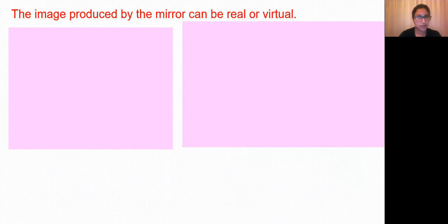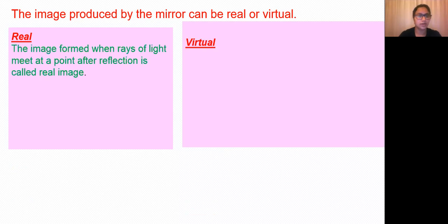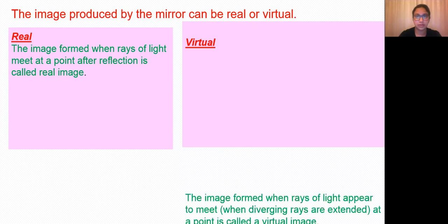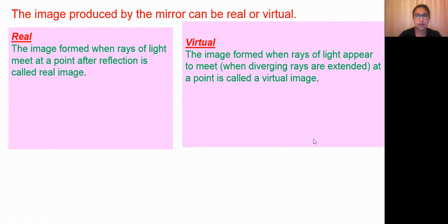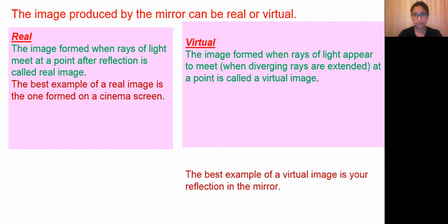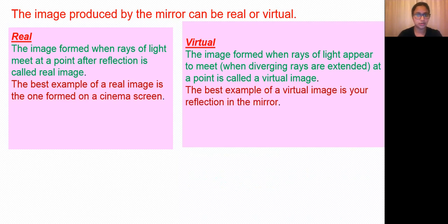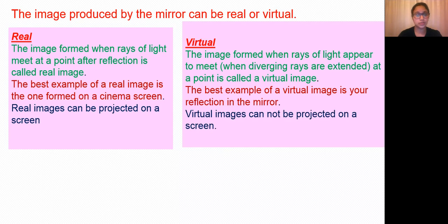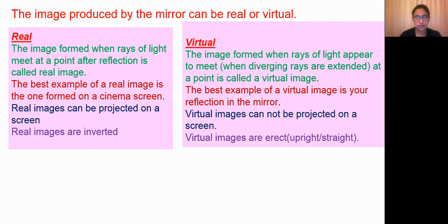The image produced by a plane mirror is virtual. Let us understand the difference between real and virtual images. A real image is formed when rays of light actually meet at a point after reflection — the best example is an image formed on a cinema screen. A virtual image is formed when rays of light only appear to meet at a point — the best example is a reflection in a mirror. Real images can be projected on a screen; virtual images cannot. Real images are inverted; virtual images are erect, meaning upright.